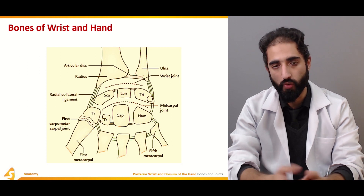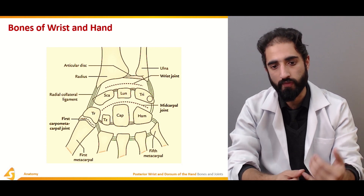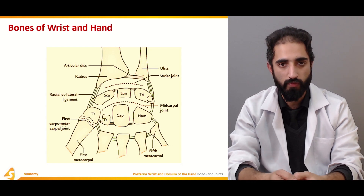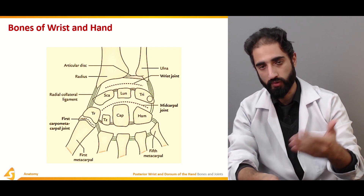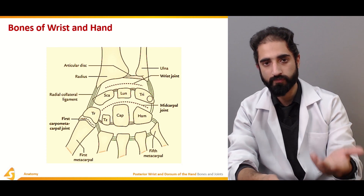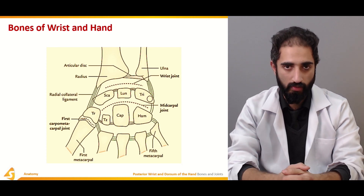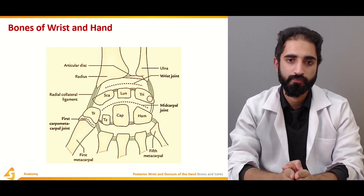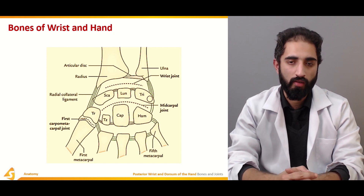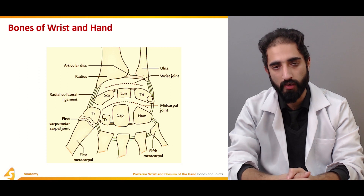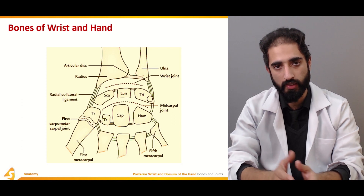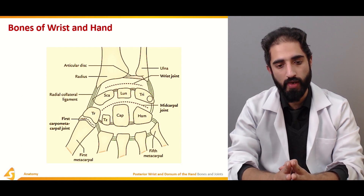These are two rows of four carpal bones each. After them we have the metacarpals, and after the metacarpals we have the rows of phalanges: proximal, middle, and distal. However, for the first digit or the thumb, we have only two phalanges — proximal and distal — and there is no middle phalanx.